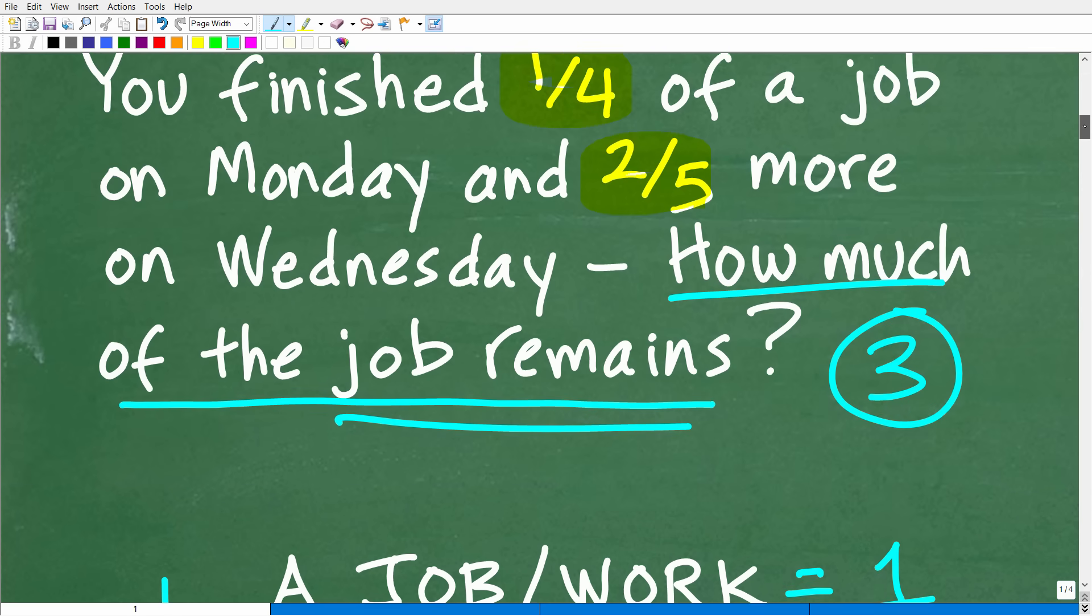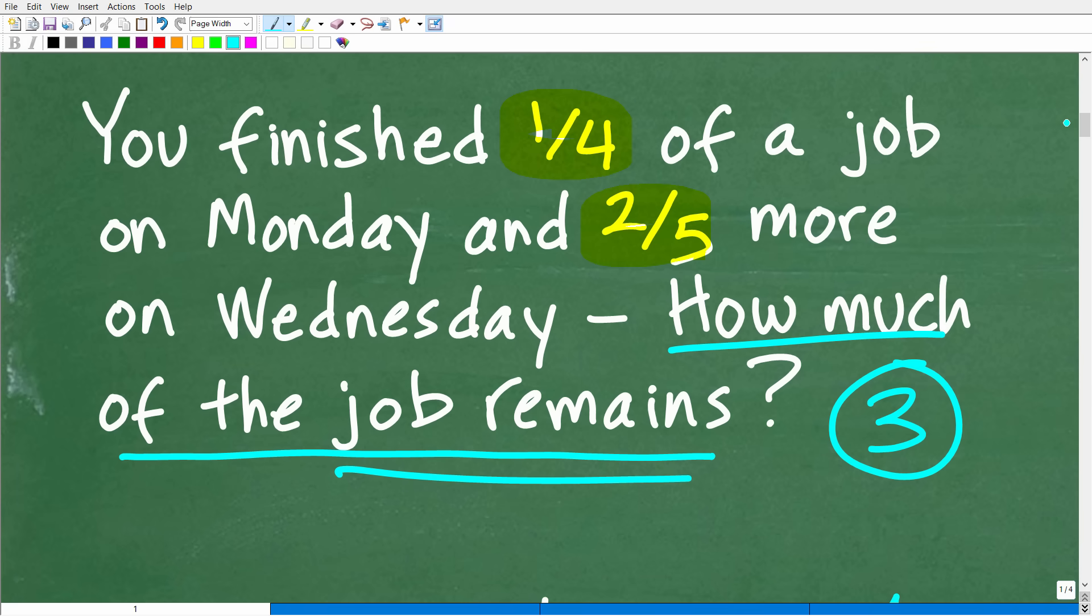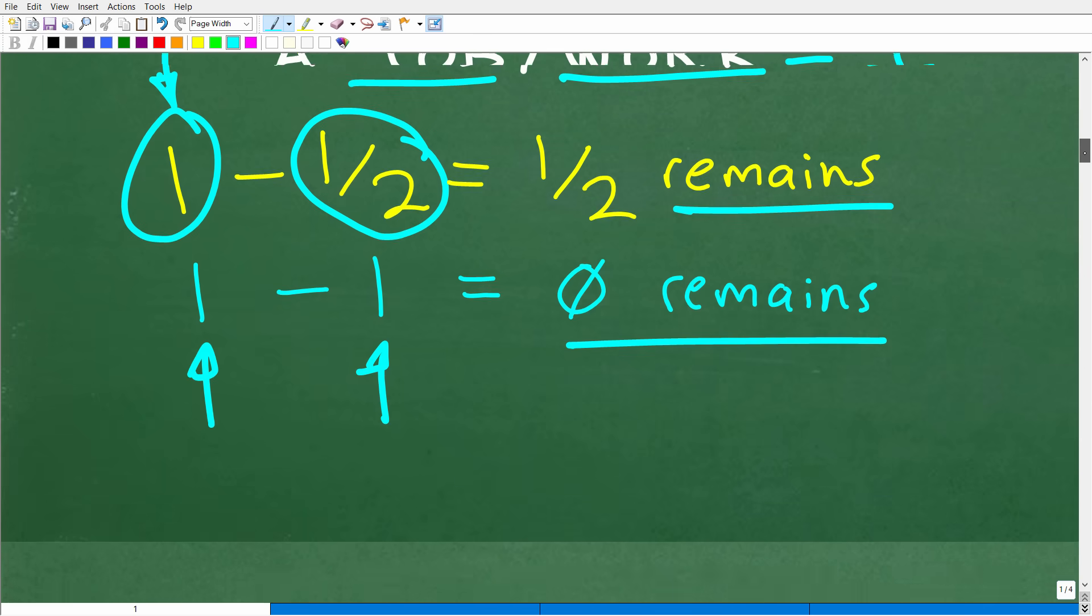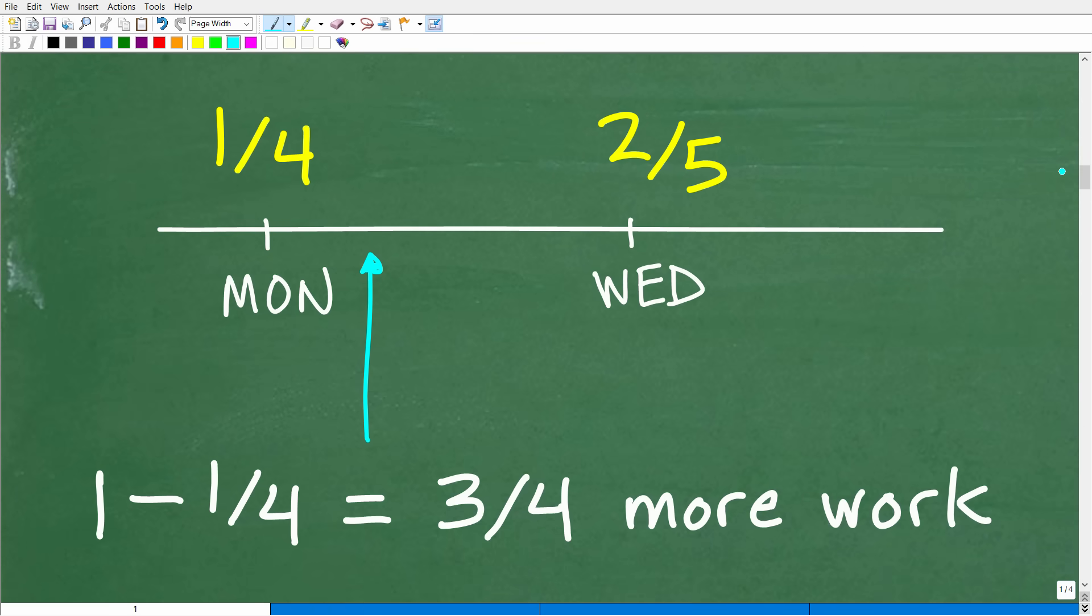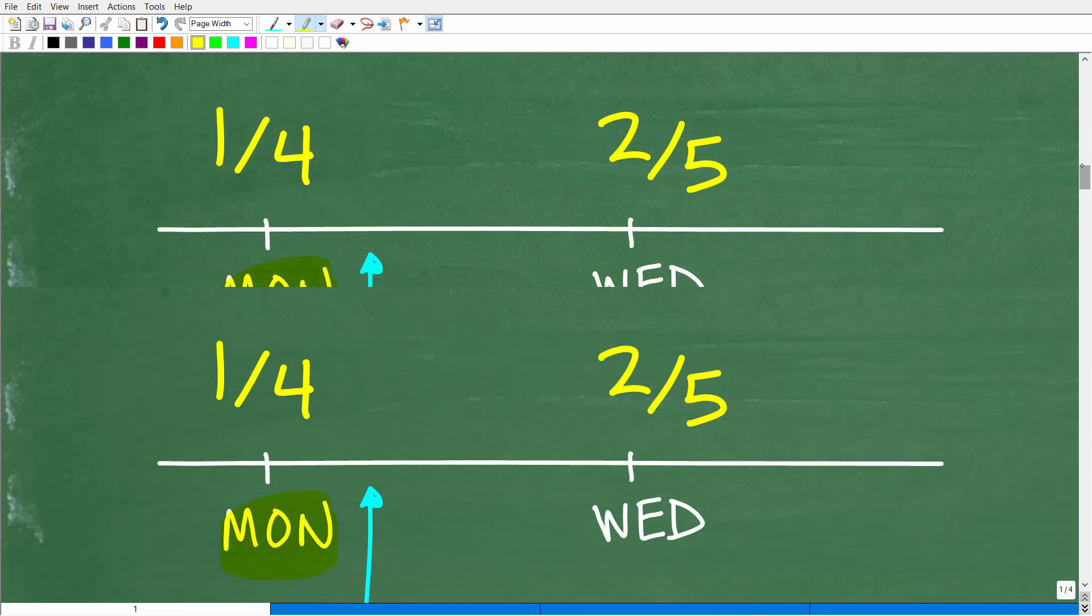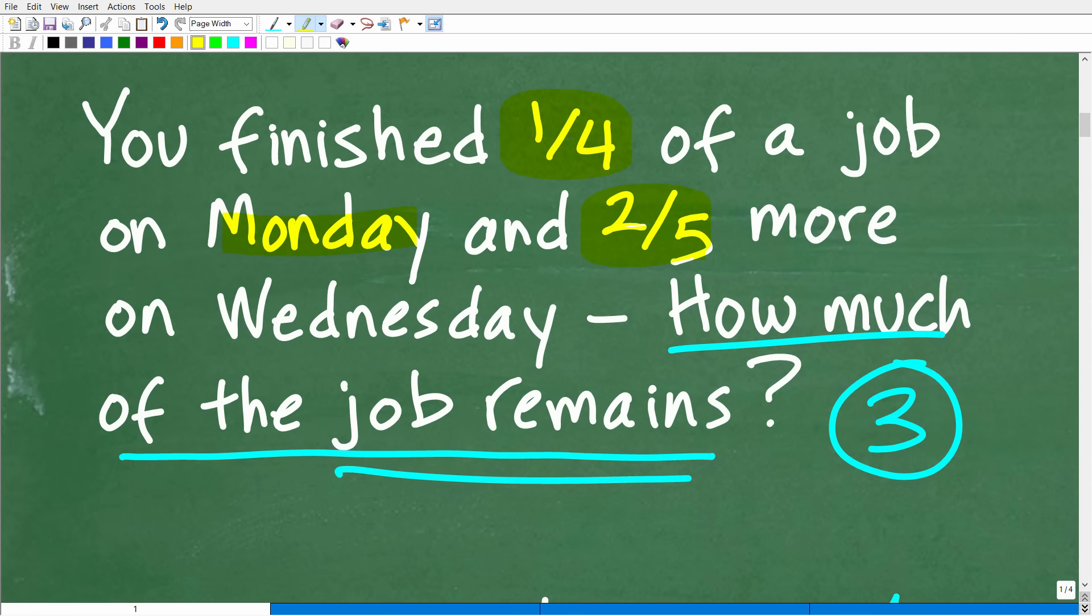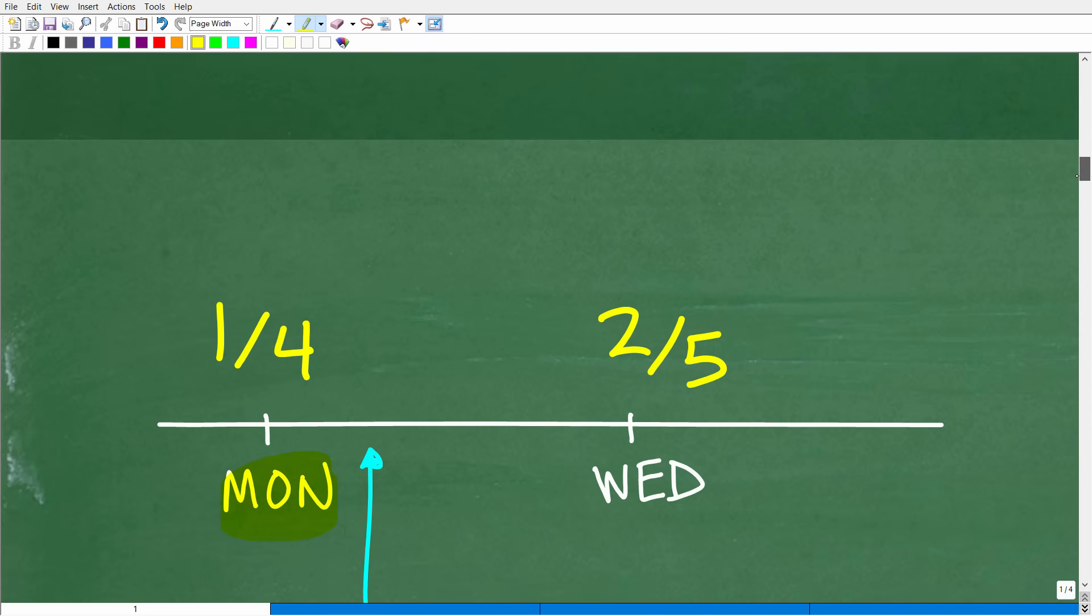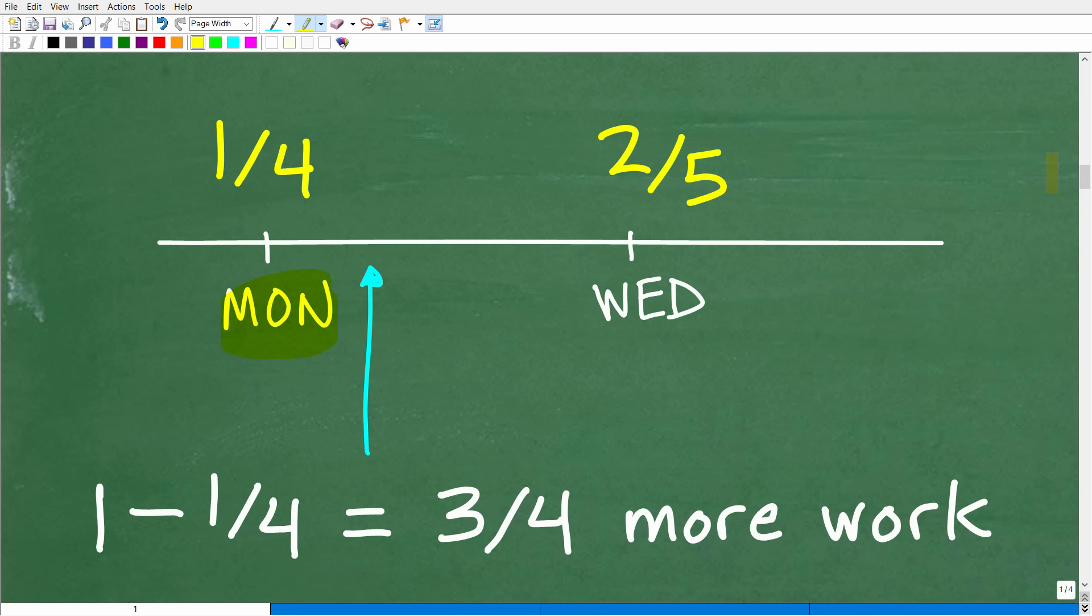So now that you understand this, what we have to do is kind of model this problem, all right? And there's different ways you can approach it, but let me show you what I did to kind of represent what's going on. Okay, so here we have our kind of weekly calendar laid out, and on Monday, okay, we did one fourth of a job. Basically, let's go back to the prompt. So on Monday, we finished, okay, one fourth of a job. And then on Wednesday, okay, we did two fifths more. So I'm just putting this on a weekly calendar. So on Monday, we did one fourth of a job, and then on Wednesday, we did two fifths more. So on Tuesday, okay, so on Wednesday, we did two fifths more. But on Tuesday, right here, before Wednesday, how much was remaining in this particular job?